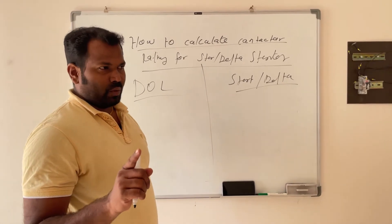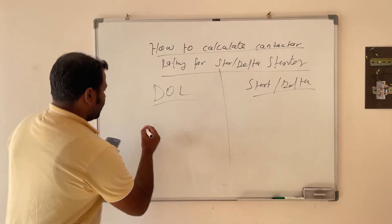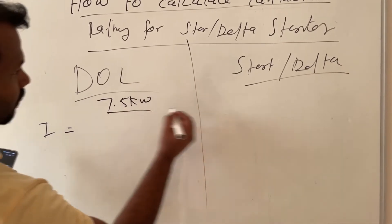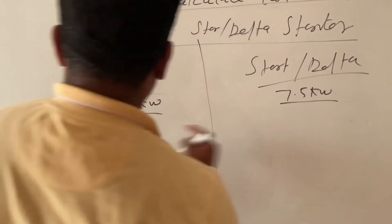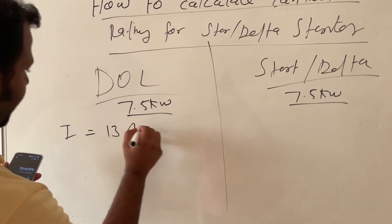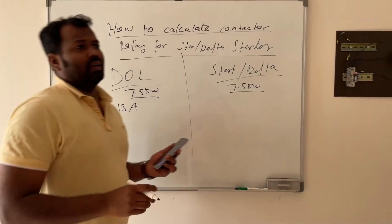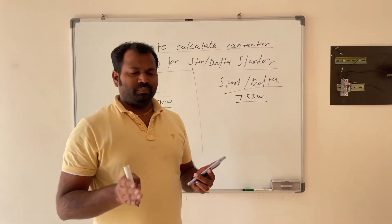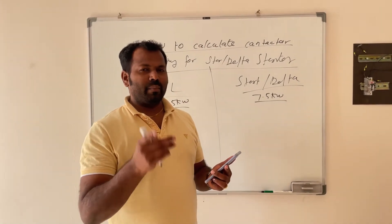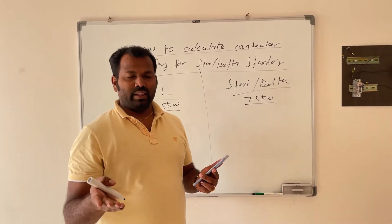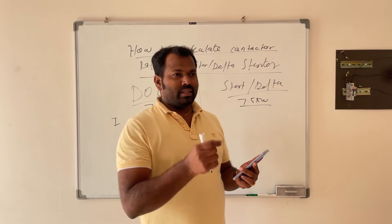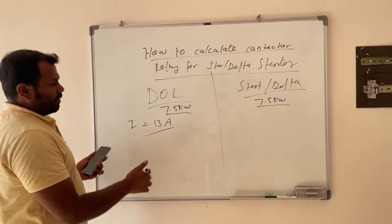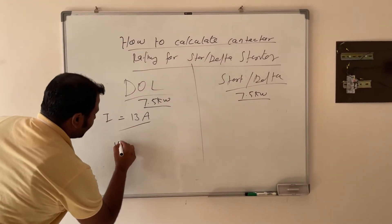For 7.5 kilowatt, as shown in my previous video on how to calculate full load current, the DOL starter current will be around 13 ampere. We should know what contactor ratings are available in each product. For example, in Schneider, the contactor ratings available start from 9 ampere, then 12, 18, 25, 32, 38, 40. So for 13 ampere full load current, the next level available is 18 ampere, so we choose an 18 ampere contactor.